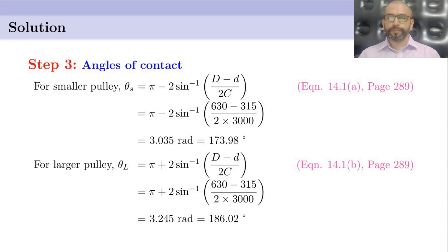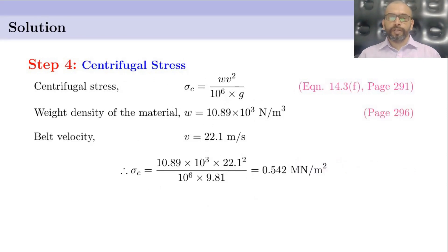In step 4, we find the centrifugal stress. The centrifugal stress σC is given as W·V² divided by (10⁶ × G), which is equation 14.3F on page 291. W, the weight density of the material, is obtained as 10.89 × 10³ N/m³ from page 296. The belt velocity V is 22.1 m/s. Substituting the values of W, V, and G, the centrifugal stress σC is found to be 0.542 MN/m².